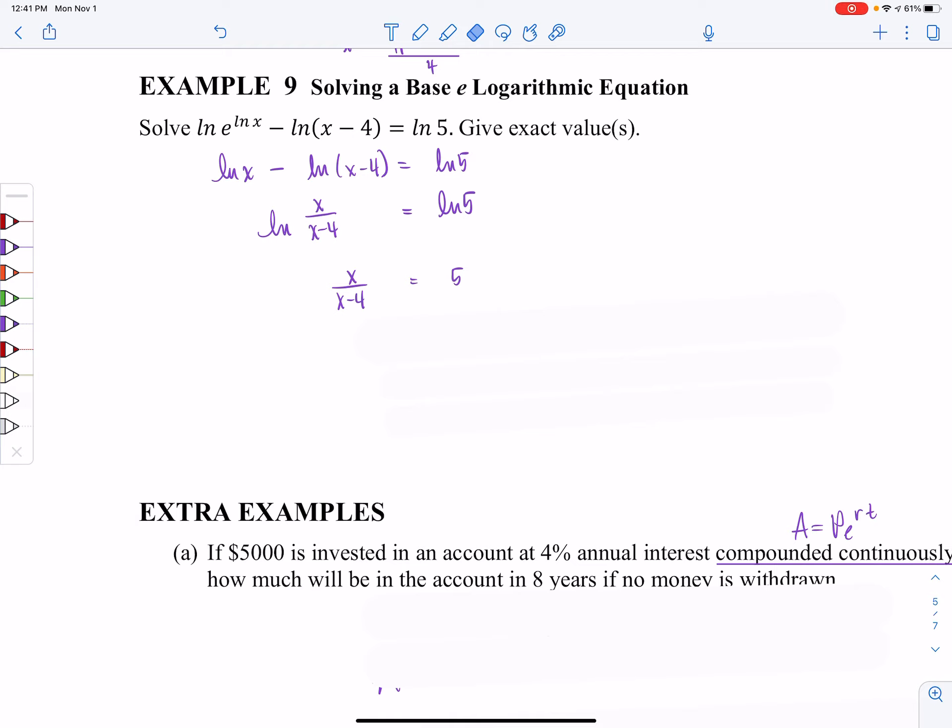And now I can just solve as normal. Notice that 5 is the same as 5 over 1. And so I can just cross multiply here. So that'll get X is equal to 5X minus 20. Combine like terms. 4X is equal to 20. Divide on both sides by 4. And you'll get an X value of 5.